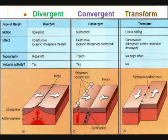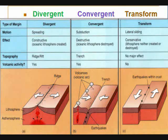To review, there are three types of plate movement at plate margins or boundaries. Divergent causes the plates to move in opposite directions. This creates holes in the crust that are filled in by volcanic activity, creating new crust.